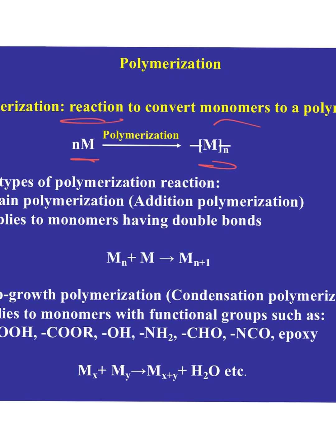Ideally we take a certain number of monomers and convert all of them to a single polymer — that's kind of how we like to think about it. That's more of an aspirational goal than a practical one, but it is part of what we're shooting for. The one we've been talking about so far has been chain polymerization or addition polymerization — two names for the same thing.